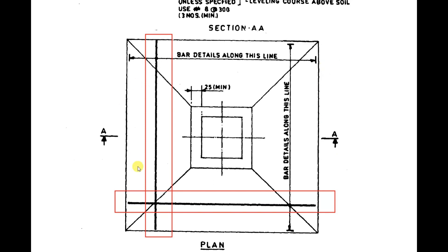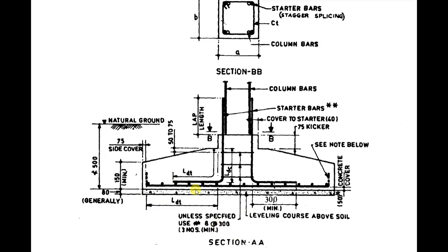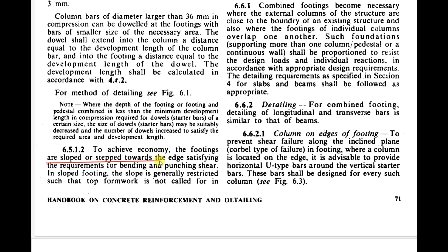In the section, the natural ground level is shown. For a sloped isolated footing, the minimum depth at the edge is 150 mm. Column bars with their development length need to be indicated. The concrete cover at the bottom is 50 mm and the side cover is 75 mm. A minimum extension bar of 300 mm also needs to be provided. All these details must appear in the footing section.